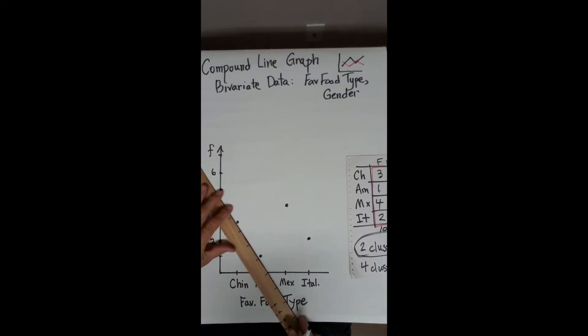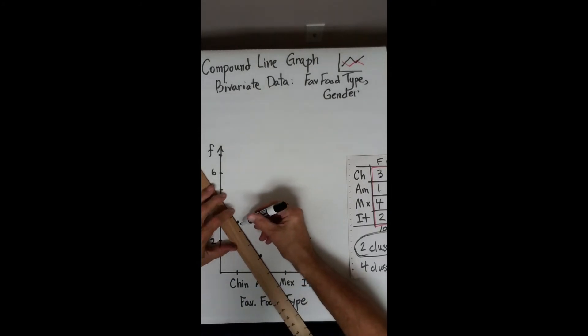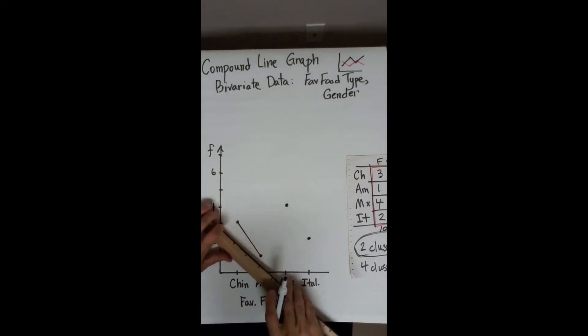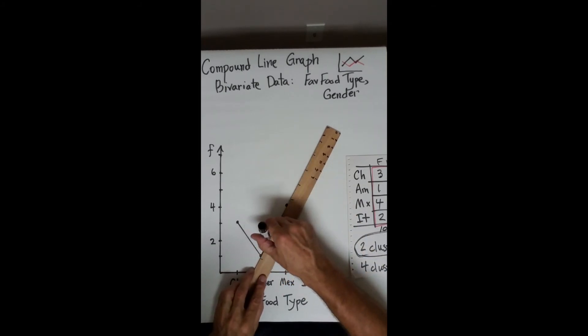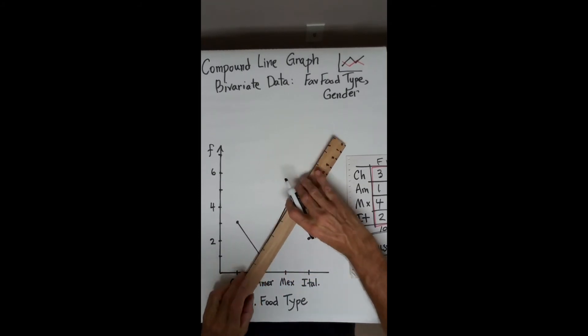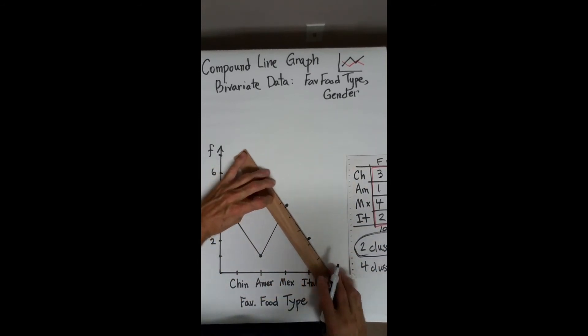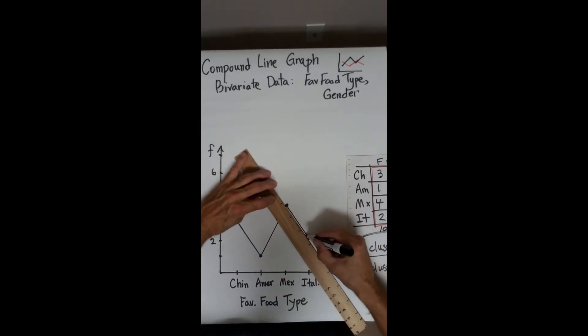Whatever the color of the dots are, that should be the same color as your line. And you connect them from left to right. You don't connect them high to low. You connect them left to right in order.